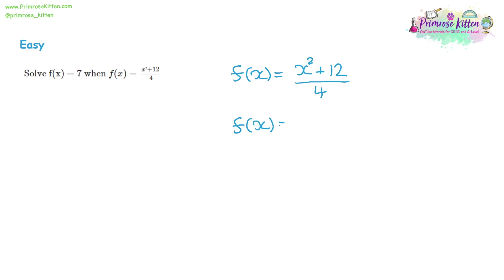You'll notice we haven't actually replaced the x in this, so it isn't going to be a substitution. We have to rethink this. The function of x is equal to our algebraic expression, and it's also equal to 7. So what we can do here is we can turn this into an equation. If f of x is equal to 7 — and that's including the f part — so not a substitution — that means that 7 is equal to x squared plus 12, all over 4.